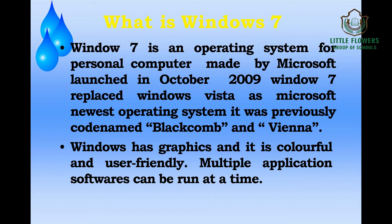Windows 7 is an operating system for personal computers made by Microsoft, launched in October 2009. Windows 7 replaced Windows Vista as Microsoft's newest operating system. It was previously named Blackcomb and Vienna.